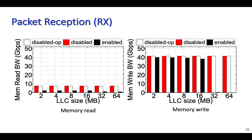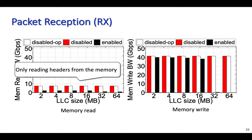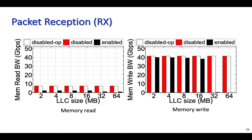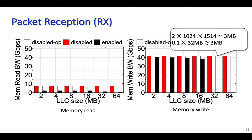Now let's see how memory bandwidth utilization looks when the simulated server receives packets with various LLC sizes. As expected, since the network application only touches headers, we see much lower memory read utilization than writes. DDIO is pretty effective in reducing memory bandwidth utilization when the LLC is larger than 32 MB. The reason is that two full descriptor buffers occupy more than 3 MB of LLC, and since DDIO by default only uses 10% of the LLC size, LLC sizes smaller than 32 MB are not sufficient to keep all network data in the LLC. Therefore, we have many conflict misses in the LLC and consequently high memory write bandwidth utilization.